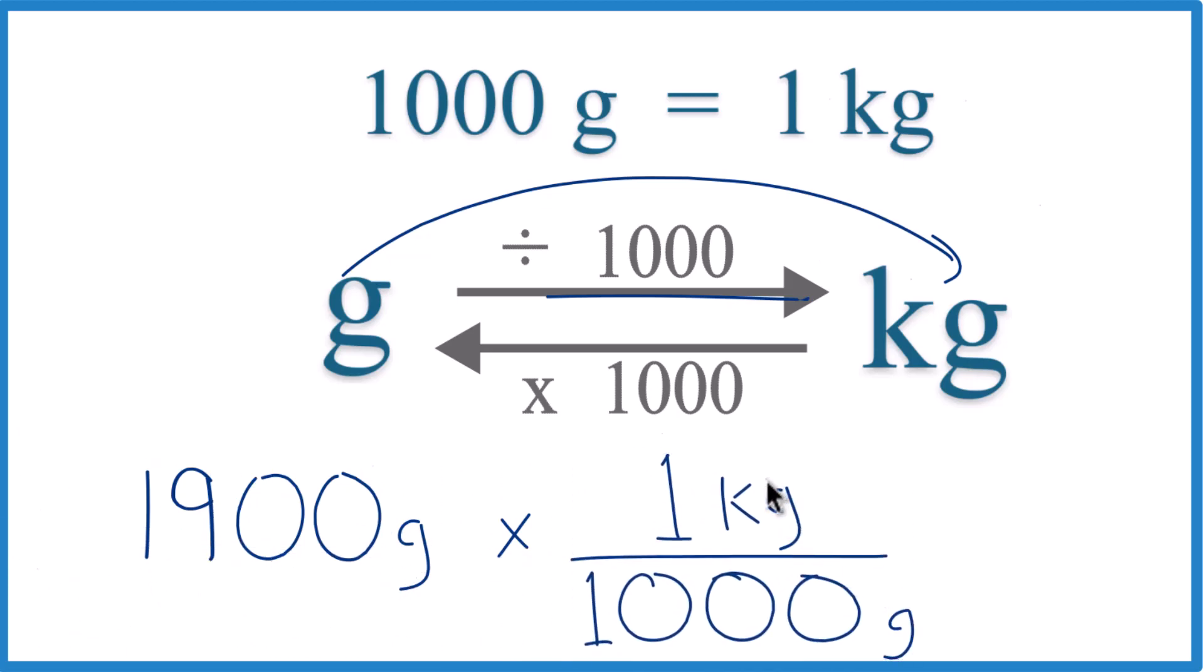And remember, one kilogram per 1,000 grams. One kilogram, that equals 1,000 grams. It's our conversion factor. Grams cancel out, left with kilograms.